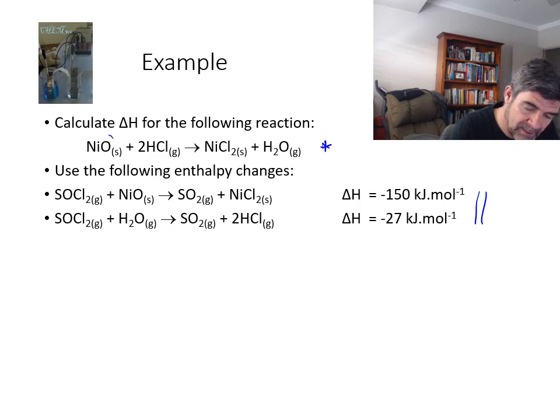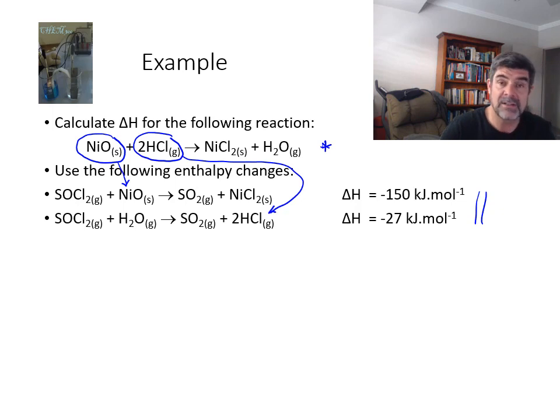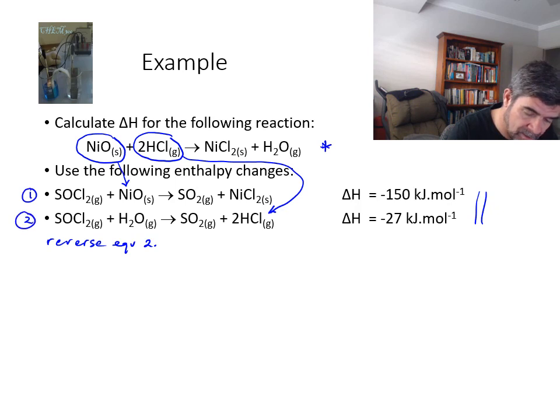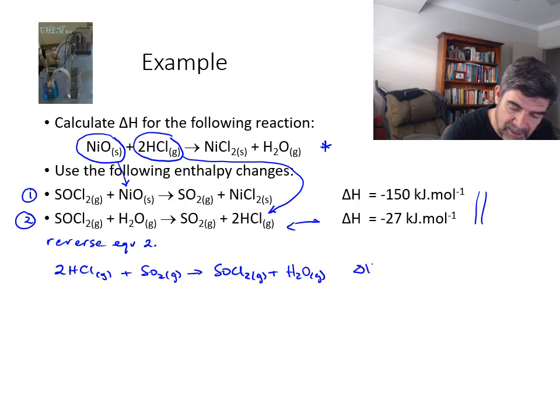Well, the first thing that we notice is that here is one of our reactants and it's here in this first equation. But the second reactant is actually in the second equation, but it is here as a product. So the first thing that I'd want to do is to reverse equation 2. Now I better have a 1 here and a 2 here so we know what we're referring to. So I'm going to reverse equation 2. When I reverse equation 2, I have 2 HCl gas plus SO2 gas going to SOCl2 gas plus H2O gas. Now because I have reversed this, the delta H value here is equal to plus 27 kilojoules per mole.